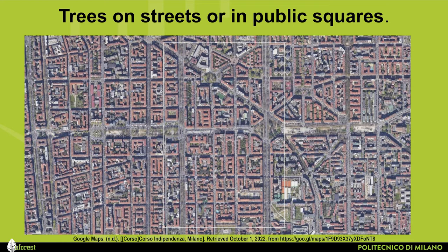The fourth typology comprises trees on street or in public squares — linear tree populations, small groups of trees, or individual trees in squares, parking lots and on streets, such as the many trees that accompany the streets in Milan. Here in the slide you can see the area close to Viale Independenza.